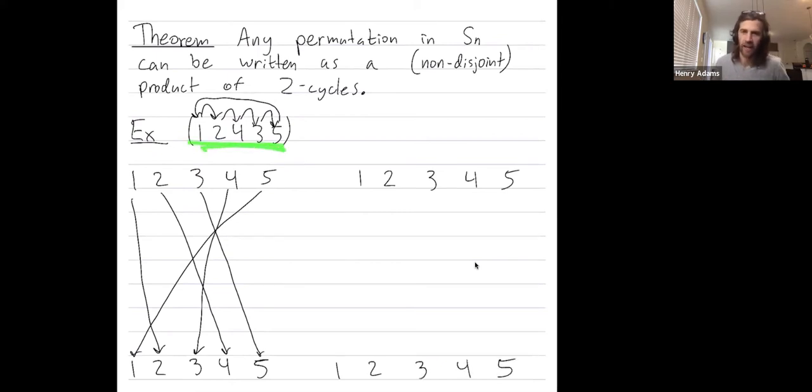When you want to write a single cycle, the way I write it as a product of transpositions will require one less transposition than the length of the cycle. So this is a 5-cycle, and I'm going to draw it as a product of four transpositions.